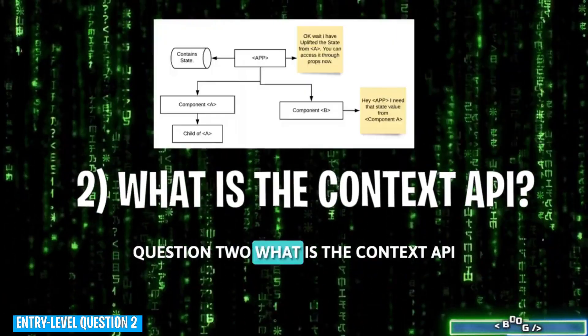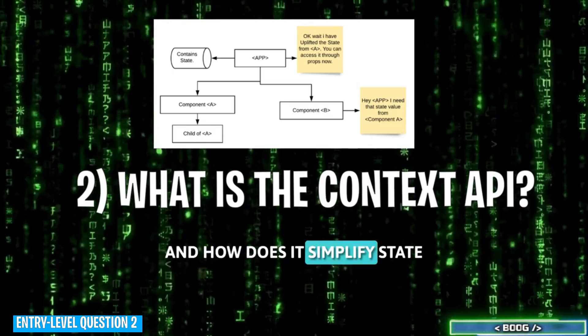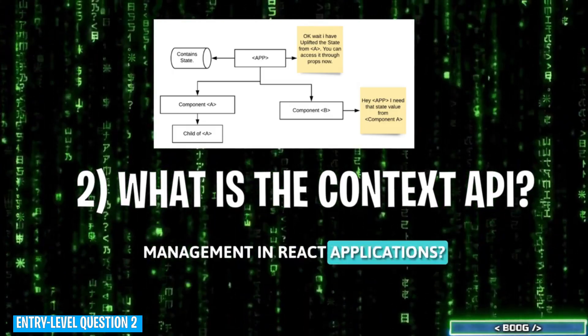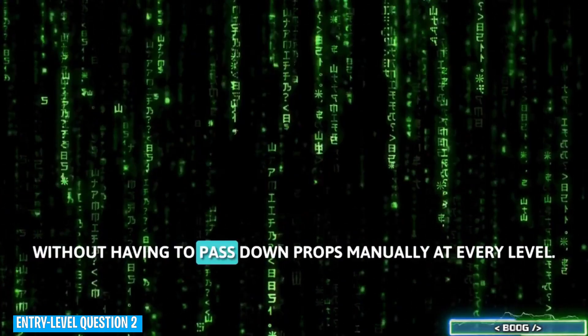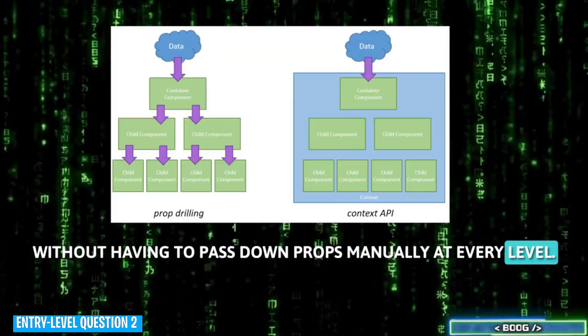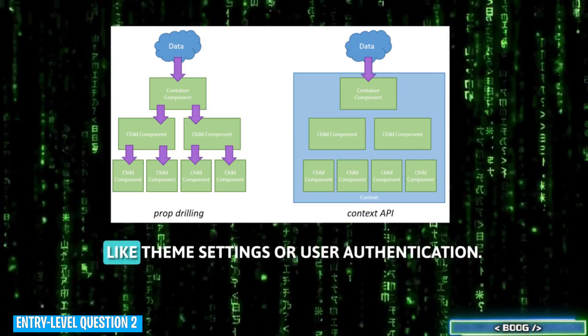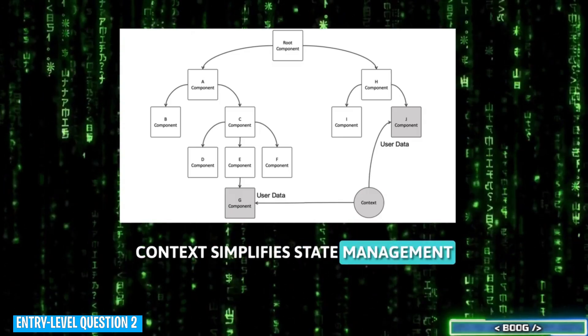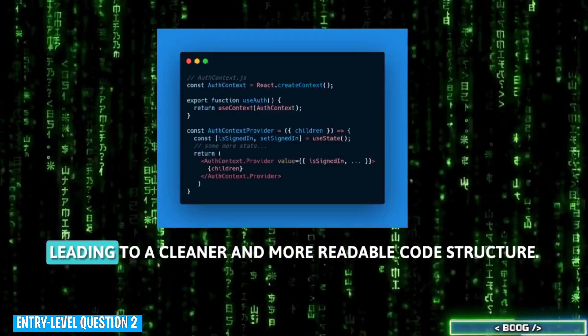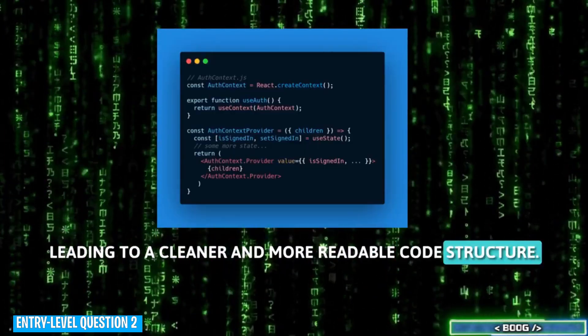Question 2. What is the Context API and how does it simplify state management in React applications? The Context API provides a way to pass data through the component tree without having to pass down props manually at every level. It's ideal for global data like theme settings or user authentication. Context simplifies state management by avoiding prop drilling, leading to a cleaner and more readable code structure.